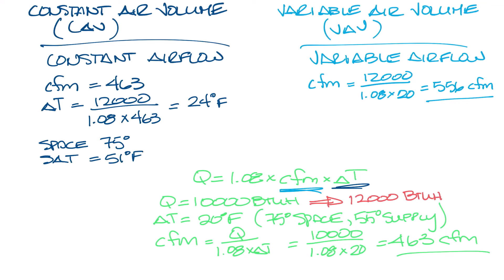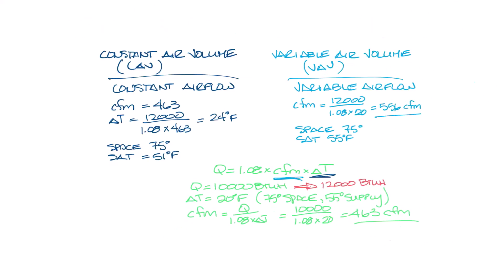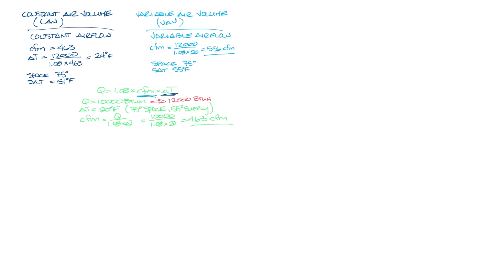And let's put this on the variable volume side. The space temperature is 75 degrees and the supply air temperature is 55 degrees. So your home HVAC system most likely is constant air volume. You turn the temperature of the air up or down to be comfortable. This also works okay on small single zone buildings.